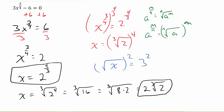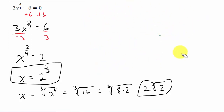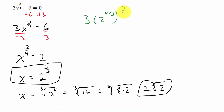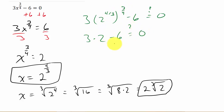Let's check the solution. Plugging 2 to the 4 thirds in for x: 3 times 2 to the 4 thirds, all raised to the 3 fourths, minus 6. That gives 3 times 2 to the 4 thirds times 3 fourths, which is 3 times 2, giving 6 minus 6 equals 0. That checks out, so x equals 2 to the 4 thirds, or 2 cube root of 2, is our solution.